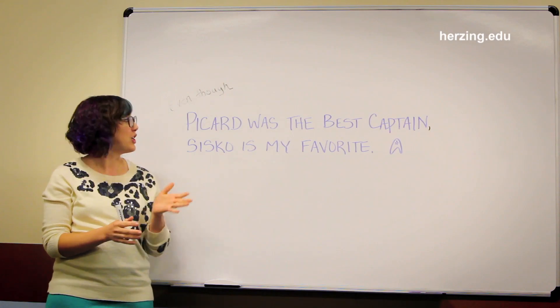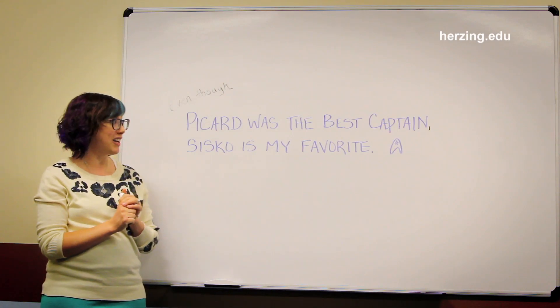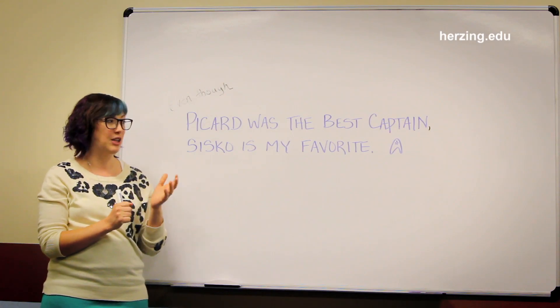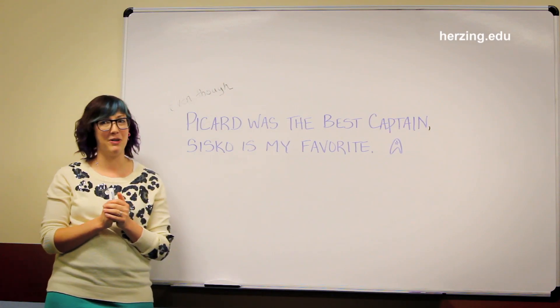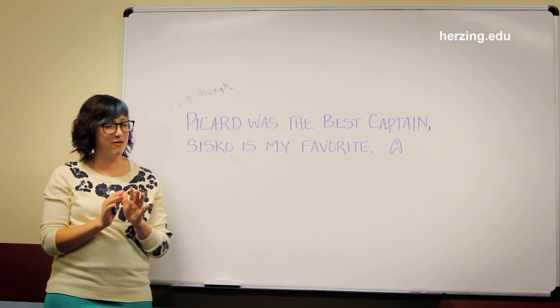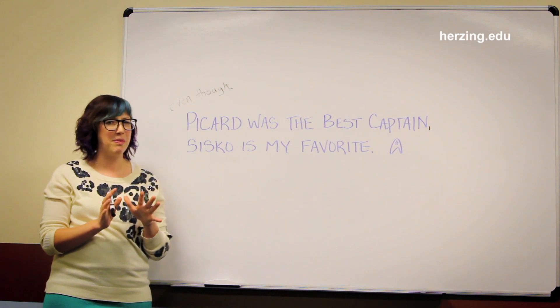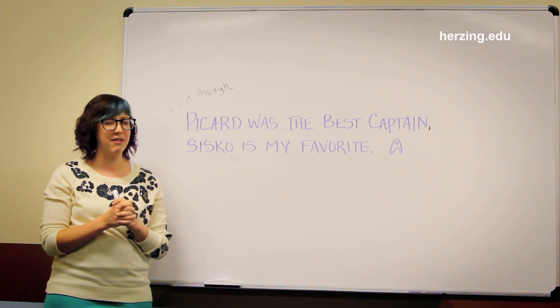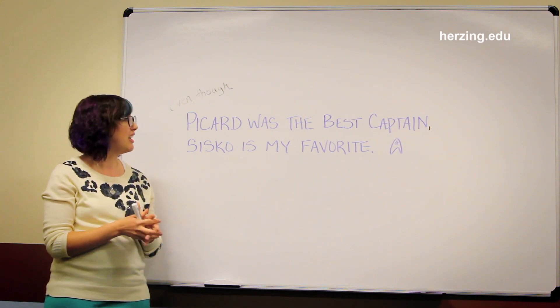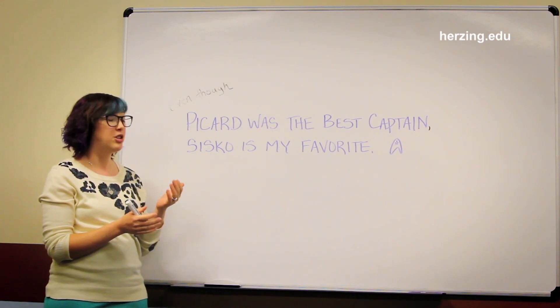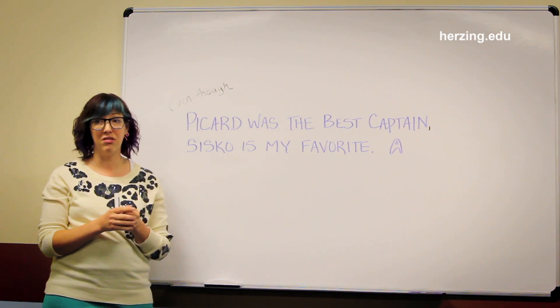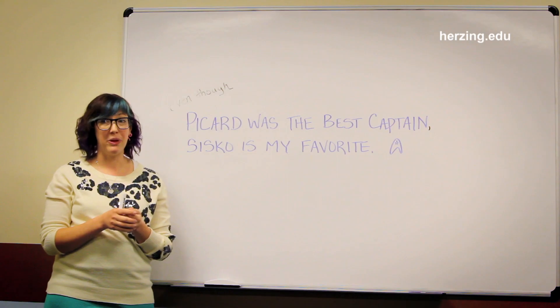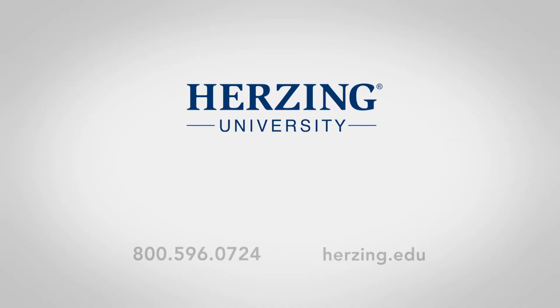Comma splices: two independent clauses separated by a comma. They're confusing, they make your writing feel rushed. Instead, use a conjunction, use a period, or use a semicolon. Thanks!